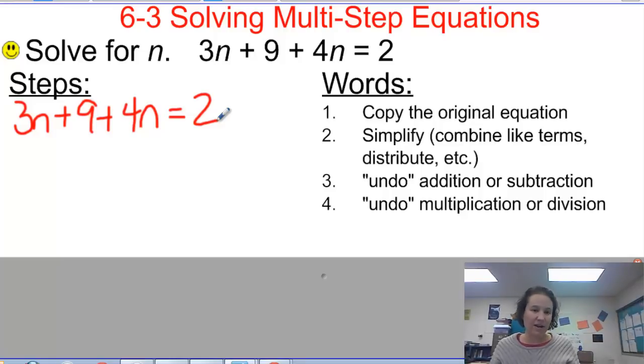So I see that I have a 3n and I also have a 4n. Notice that all of the operations in this equation are addition, so I can move the terms around as much as I want using the commutative property. I'm going to combine 3n and 4n. If I have 3 n's and then 4 more n's, I'm going to end up with 7n, and then I still have my plus 9 equals 2. There's nothing else I can combine, so I've simplified as much as possible.